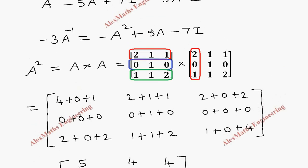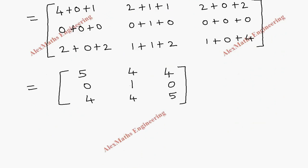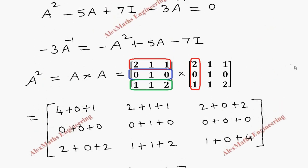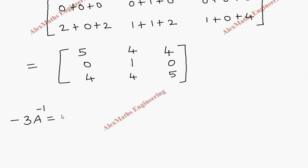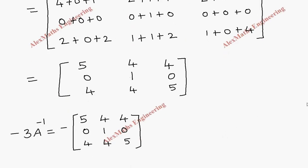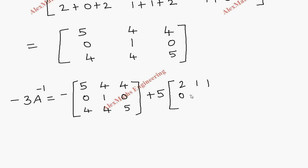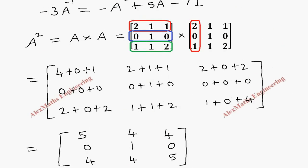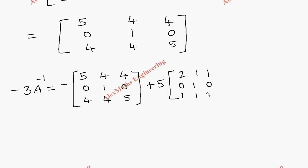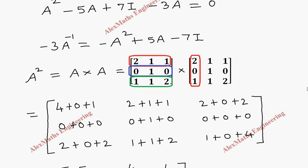After getting A squared, we substitute into the expression. Minus 3 A inverse equals: first, minus A squared — so we take minus of this A squared: 5, 4, 4; 0, 1, 0; 4, 4, 5. Then plus 5A, so we take 5 times A: 2, 1, 1; 0, 1, 0; 1, 1, 2. Then minus 7I, which is the identity: 1, 0, 0; 0, 1, 0; 0, 0, 1.